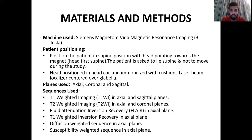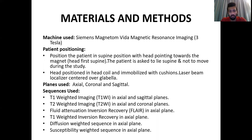The study was performed on a Siemens Magnetom Vida 3 Tesla. Patient positioning was done in supine position with the head pointing towards the magnet. The head is positioned in the head coil and immobilized with cushions, with laser beam localized center over the glabella. Planes used were axial, coronal, and sagittal. Sequences used were T1-weighted in axial and sagittal planes, T2-weighted in axial and coronal planes, FLAIR in axial plane, T1-weighted inversion recovery in axial plane, diffusion-weighted sequences in axial plane, and susceptibility-weighted sequence in axial plane.